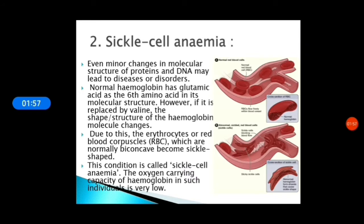The second mutational disorder is sickle cell anemia. Even minor changes in the molecular structure of proteins and DNA may lead to diseases or disorders. Normal hemoglobin has glutamic acid as the sixth amino acid in its molecular structure. However, if it is replaced by valine, the shape or structure of the hemoglobin molecule changes. Due to this, the erythrocytes or red blood corpuscles, also known as RBCs, which are normally biconcave, become sickle-shaped.